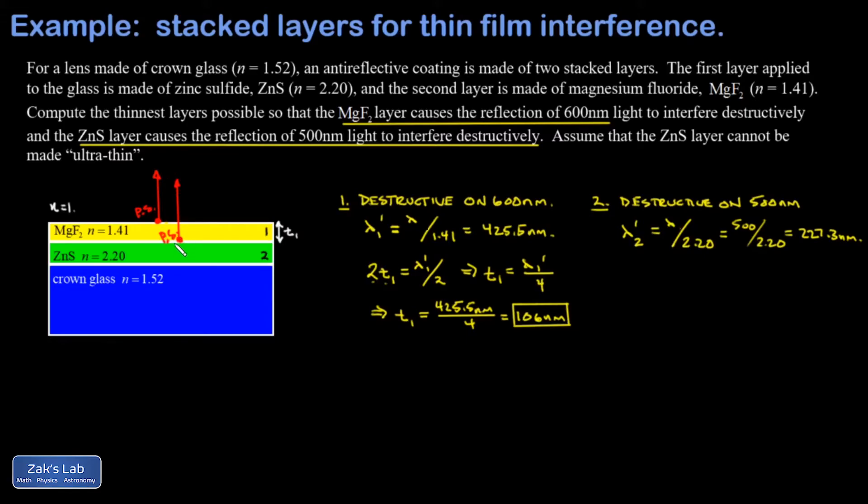Then I want to visualize both reflections. I already have the first one: the phase shifted reflection off the interface between the magnesium fluoride and the zinc sulfide. Then I have some light that is transmitted through the zinc sulfide layer and reflects off the interface with the crown glass. This is a slow to fast transition—the light is actually speeding up. The crown glass has a smaller index of refraction than the zinc sulfide layer, so with that reflection I get no phase shift.